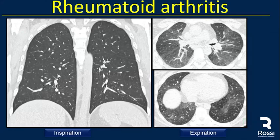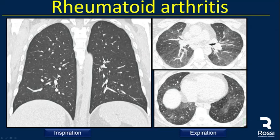We always perform expiratory CT in patients with rheumatoid arthritis and Sjogren's, as both entities can manifest with bronchial disease and constrictive bronchiolitis. In this case, there is a slightly normal coronal view on inspiration. When we perform expiration, we see areas of air trapping with areas of normal lung in a patient with rheumatoid arthritis.